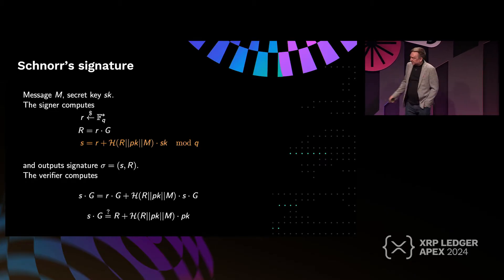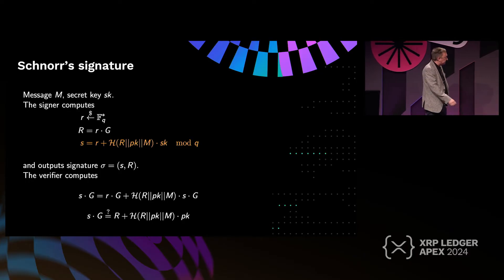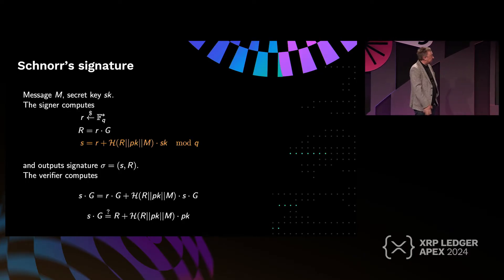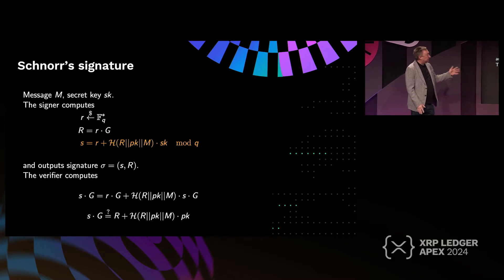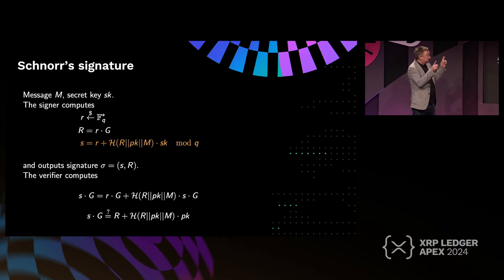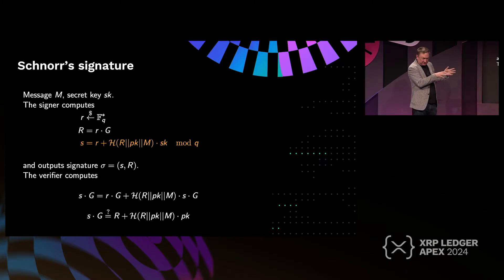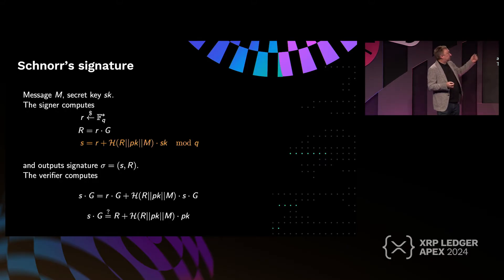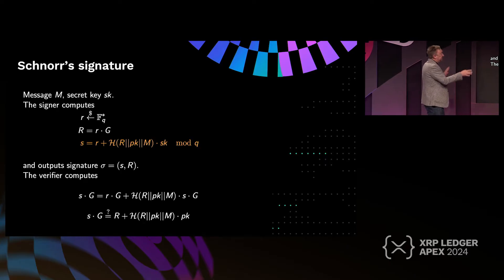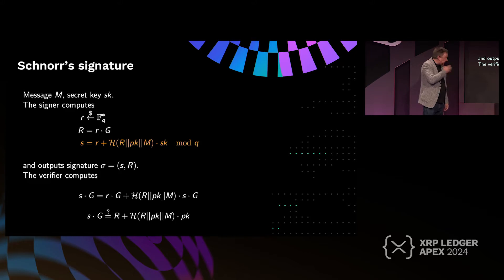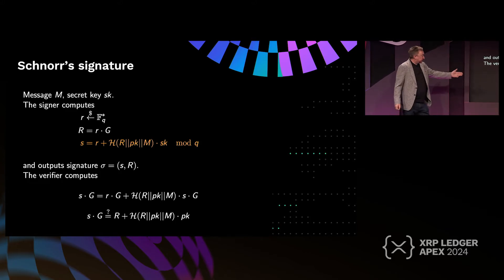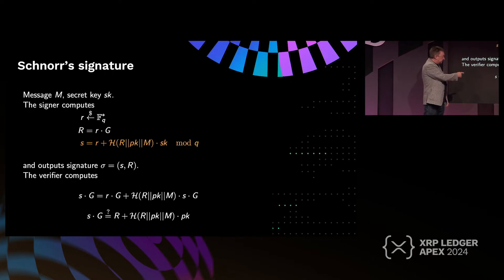This is simple mathematics pertaining to EdDSA — the Schnorr signature. The signature formula consists of a random number R plus the result of hashing some public components, including the message M (or transaction body), multiplied by the secret key. To validate, we also share R times G, where G is the base point on the elliptic curve. Multiplying S by G gives a formula where everything becomes public: R is public, H is public, and the public key is public.